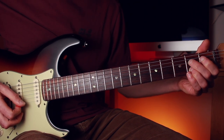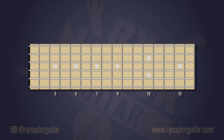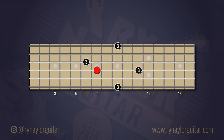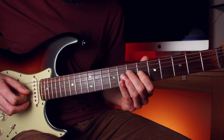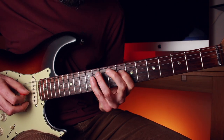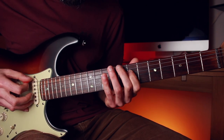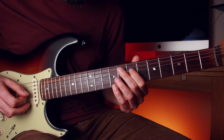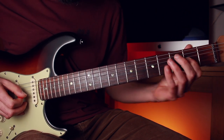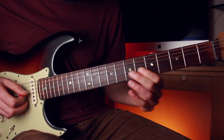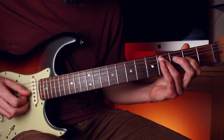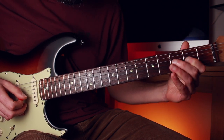The first practice I did to have the intervals clear on the fretboard is to choose a note at random and then find all the major thirds around it. You should make sure you do this with both the major thirds and minor thirds.